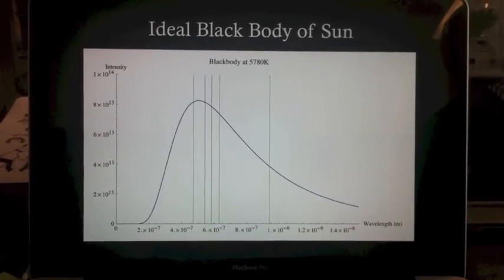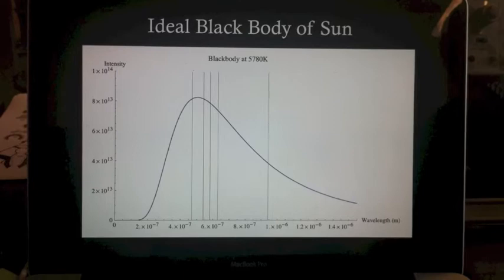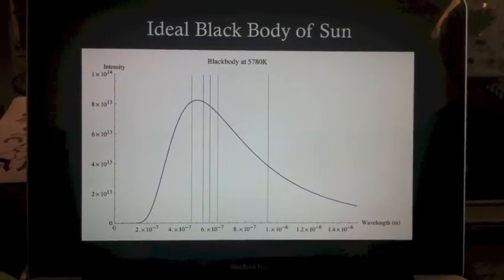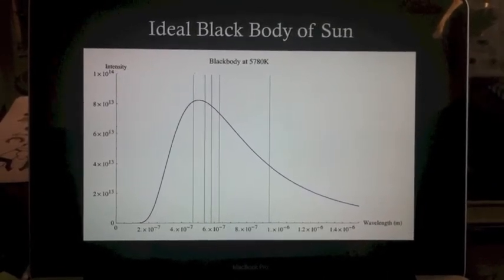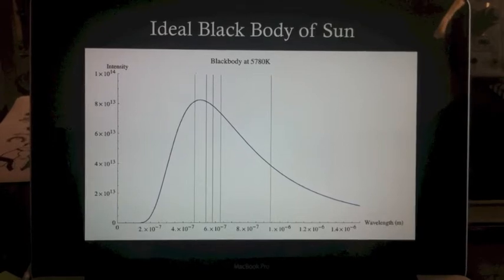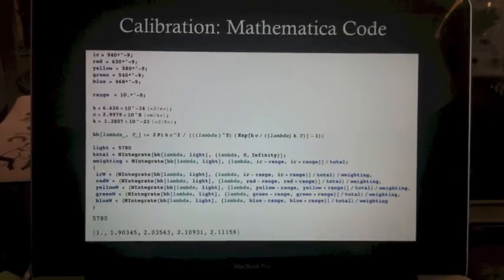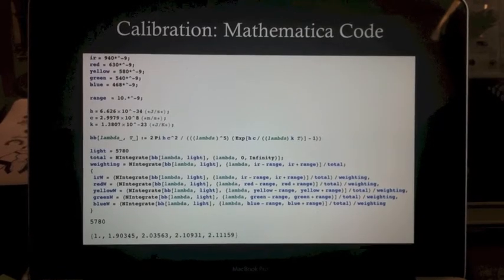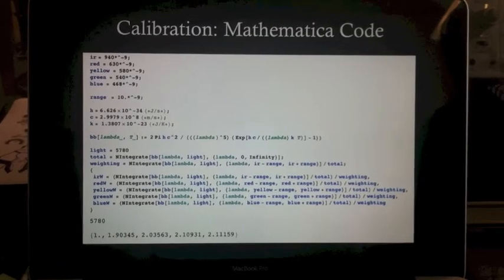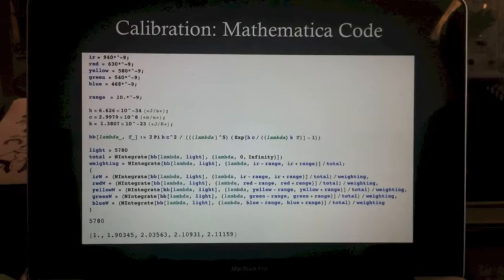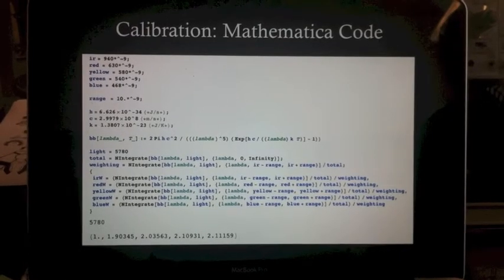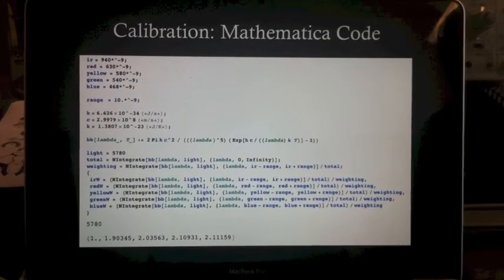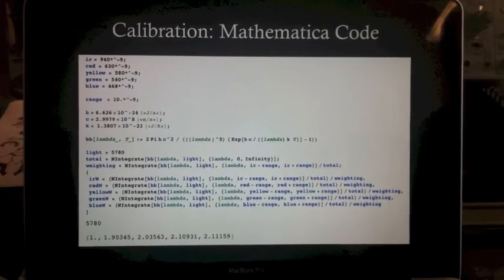The idea is that when we shine our spectrometer directly at the Sun, we should be able to match these values on our output. We wrote some code. The code takes a 20 nanometer swap for each value, takes the integral to find out how much that LED should be getting roughly.